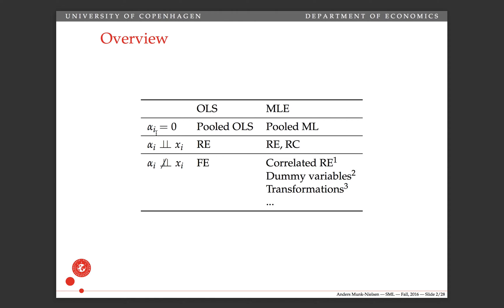We're going to compare OLS and maximum likelihood estimation for the same model — the linear model here — but it applies to many more models. When we don't have any individual effects alpha i, we just use pooled OLS or pooled maximum likelihood and we pretend that the data, even though it comes from the same individual at two different time periods, is iid over both individuals and time. Basically we pool the entire data set and treat people at different points in time as completely different people.